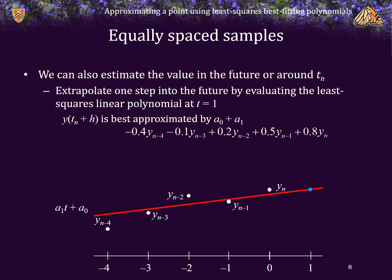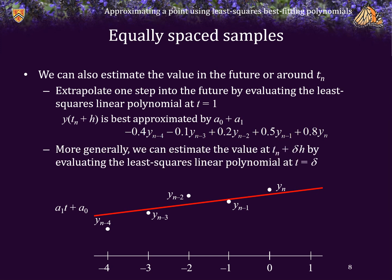Notice that if we've already calculated a-naught and a1, we can just add these two known coefficients. More generally, we can also estimate the value at some point t_n plus or minus delta·h, which would be found by evaluating this least squares best fitting linear polynomial at t equals delta. Therefore the best approximation of the value of the function at t_n plus delta times h is just a-naught plus delta times a1.